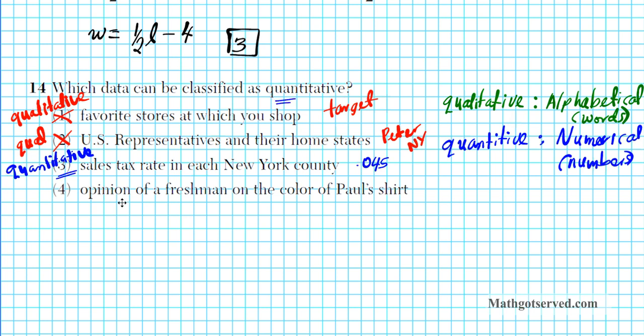Something that can be described using numbers. That's what quantitative means. The last one, opinion of a freshman on the color of Paul's shirt. Paul's shirt is great. So what kind of description is that? This is alphabetical description, a word description. Hence, option 4 is qualitative. So hopefully this helps you see the difference between quantitative and qualitative. As soon as the problem asks for quantitative, our final answer is going to be option number 3.